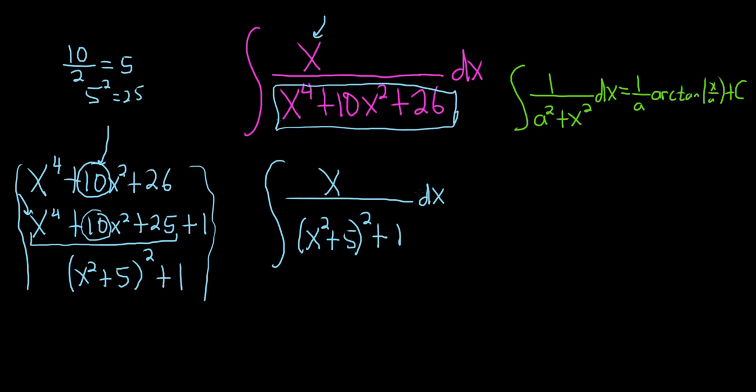However, we first need to make a u substitution. So the 1 squared will match the a squared. So a will be 1 in our problem. So let's go ahead and call this piece here u.